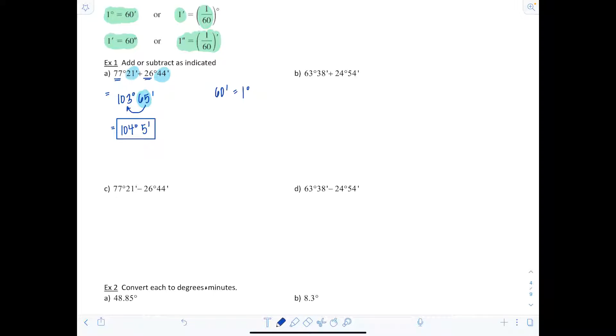Let's look at another example. We have 63 degrees 38 minutes plus 24 degrees and 54 minutes. First add together the degree portion. 63 degrees and 24 degrees gives us 87 degrees.